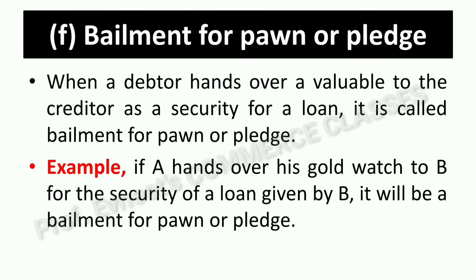Next is bailment for pawn or pledge. Pawn or pledge means to mortgage or hypothecate. When a debtor hands over a valuable to the creditor as security for a loan, it is called a bailment for pawn or pledge. For example, if you mortgage your house or property or pledge your jewelry to take a loan from someone — suppose A hands over his gold watch to B as security and takes a loan of ₹50,000 in return — this is bailment for pawn or pledge.